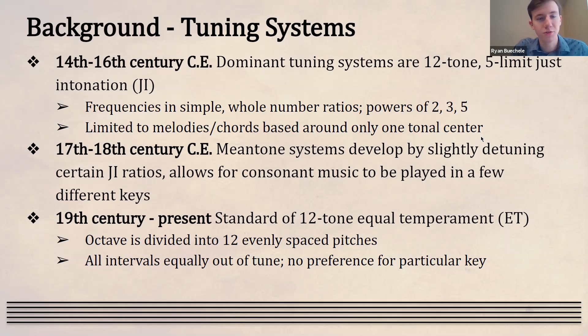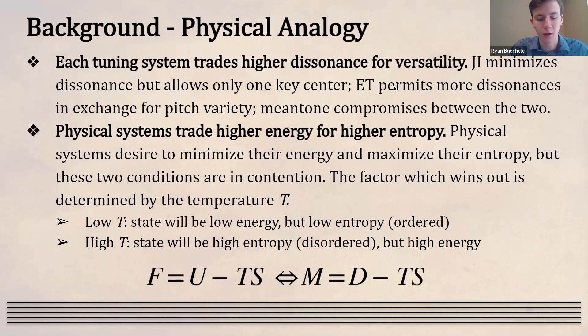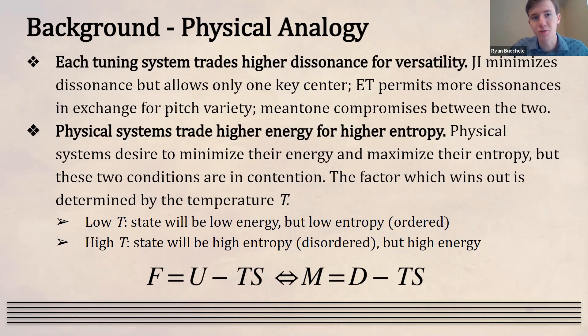Into the 19th century and present day, the standard is 12-tone equal temperament, where you divide an octave into an even number of pitches — usually 12. All intervals are considered equally out of tune, so it's less consonant than just intonation, but there's no preference for a particular tonal center and there's much more flexibility in note and chord choice. Each tuning system balances a trade-off: lower dissonance versus higher note variety. The least dissonance would be just one note, but that's very boring; as we add more pitches, we introduce more dissonance.